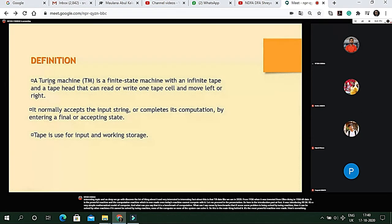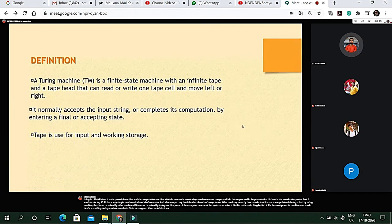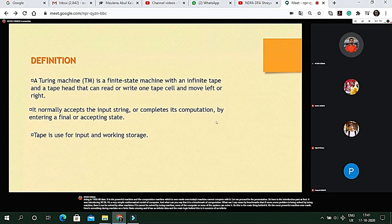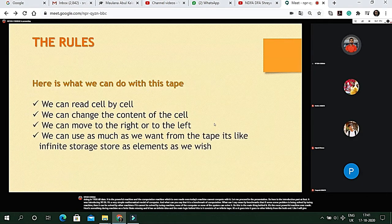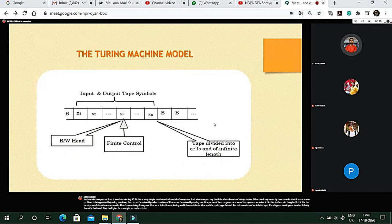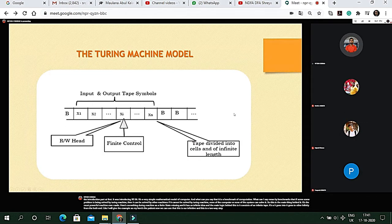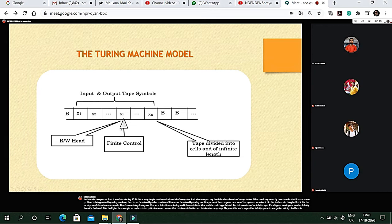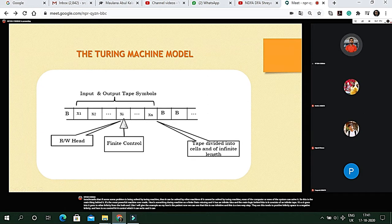Turing machine is a finite state machine with an infinite tape. The main logic behind this is it consists of an infinite tape that goes to infinity from both ends. Here is the picture. Now we can see that this is our infinite tape and this is a two-way tape. This tends to positive infinity and this tends to negative infinity. And here is the control head that can read and write.